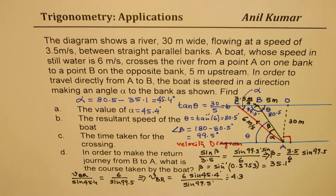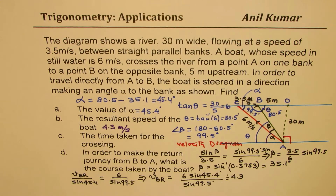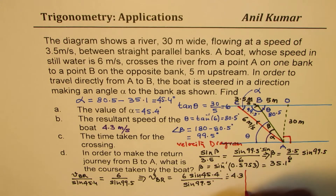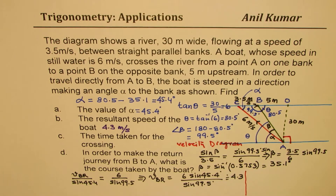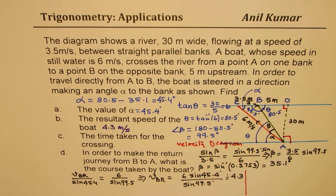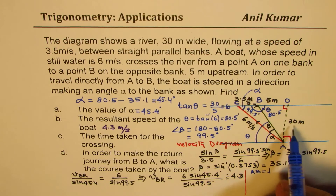The resultant velocity of the boat from A to B is 4.3 meters per second. Now for the time taken for the crossing — we need to find the distance and divide by the speed. To find distance AB, we use the Pythagorean theorem since this is a right triangle. So AB equals the square root of 5 squared plus 30 squared.